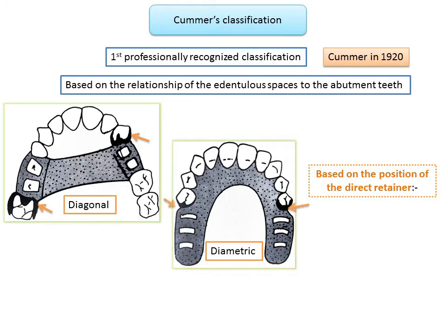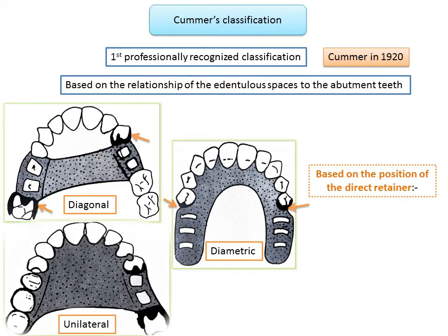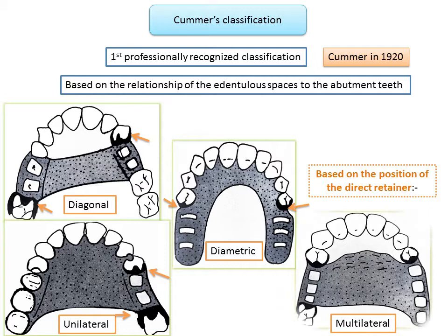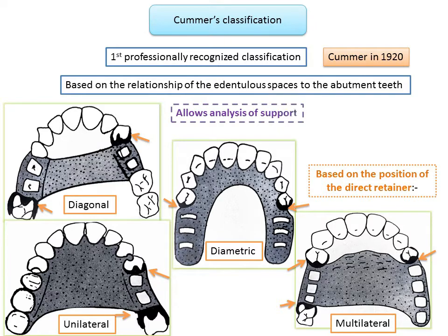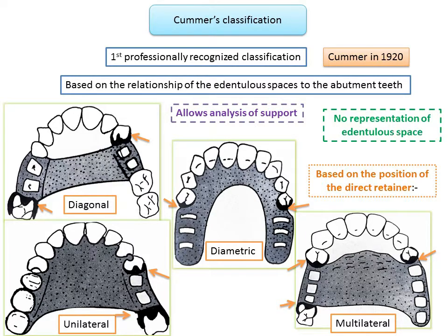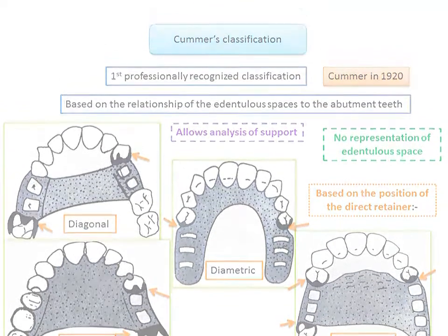The four types are: diagonal, diametric, unilateral (two or more direct retainers present on the same side), and multilateral (wherein three or four direct retainers in a triangular or quadrangular relationship are present). The advantage of this classification is that it allows the analysis of support to the teeth, whereas the demerit is that it does not represent the edentulous space or how many teeth are present in the edentulous space.